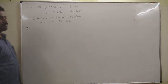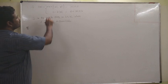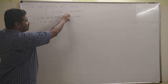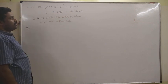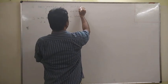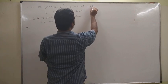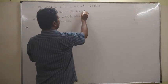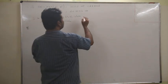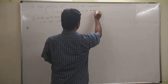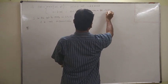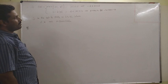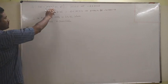Next important problem: f of x equal to maximum of mod x, x squared for mod x less than or equal to 2, and 8 minus 2 mod x for 2 less than mod x less than or equal to 4. The condition mod x less than or equal to 2 means minus 2 less than or equal to x less than or equal to 2, and 2 less than mod x less than or equal to 4 means either 2 less than x less than or equal to 4 or minus 4 less than or equal to x less than minus 2.